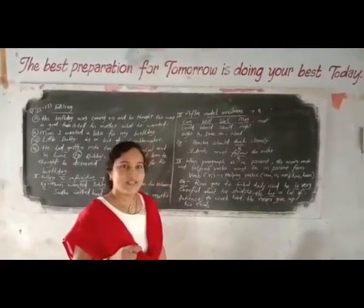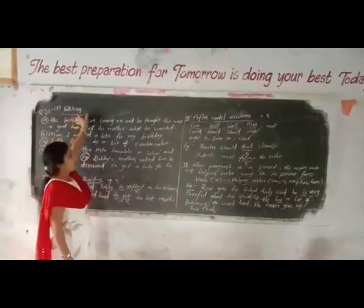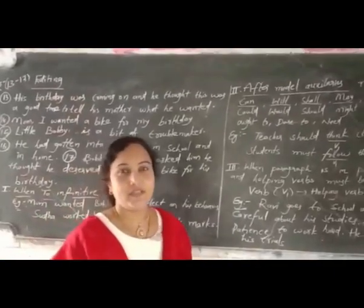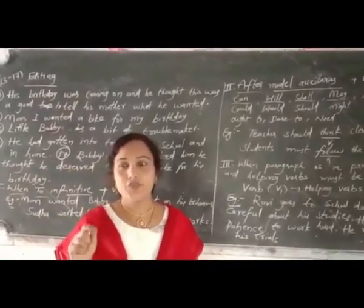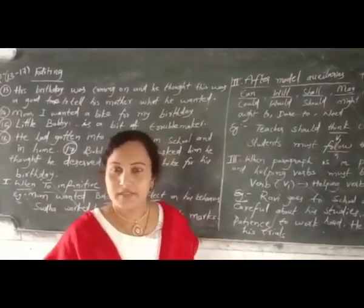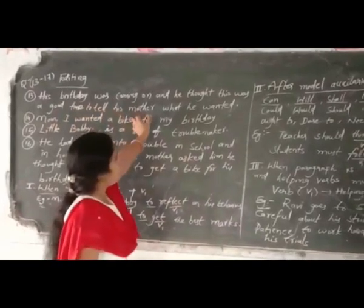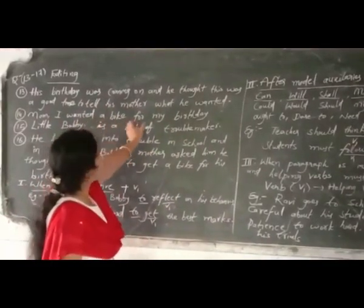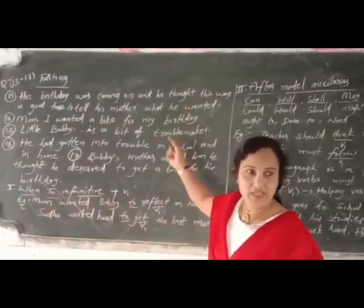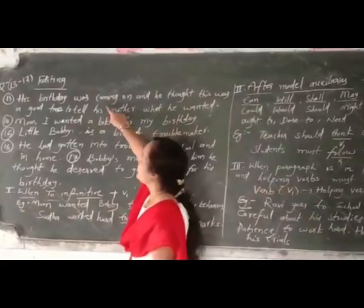Now see here — question number 13 to 17, that is the editing part. That means some errors will be given in the middle of sentences. You need to identify the errors and rectify them. Look here: 'His birthday was coming on, and he thought this was a good time to tell his mother what he wanted.' What is the mistake you can identify here?